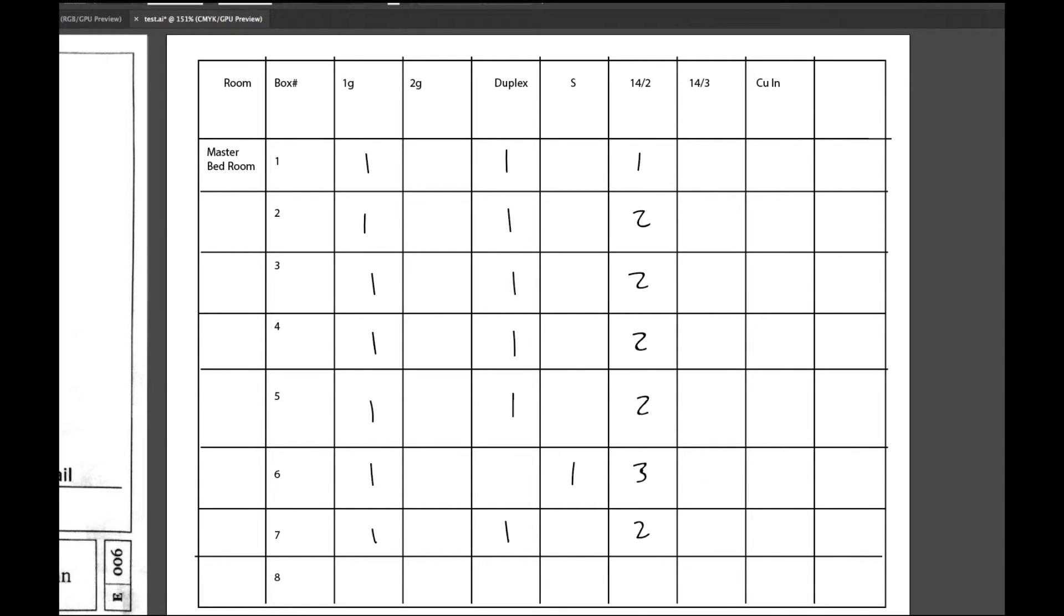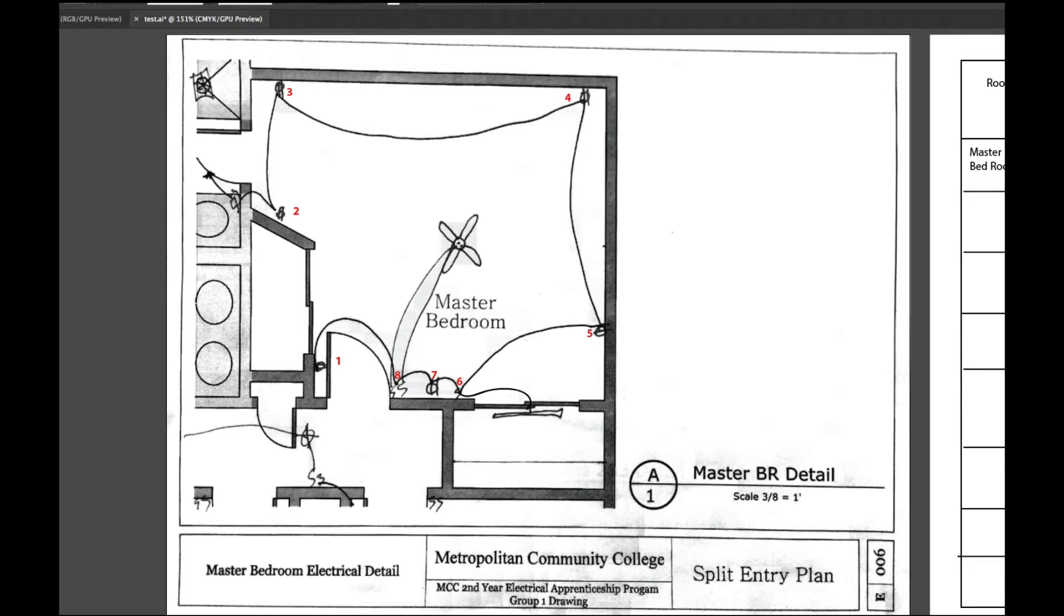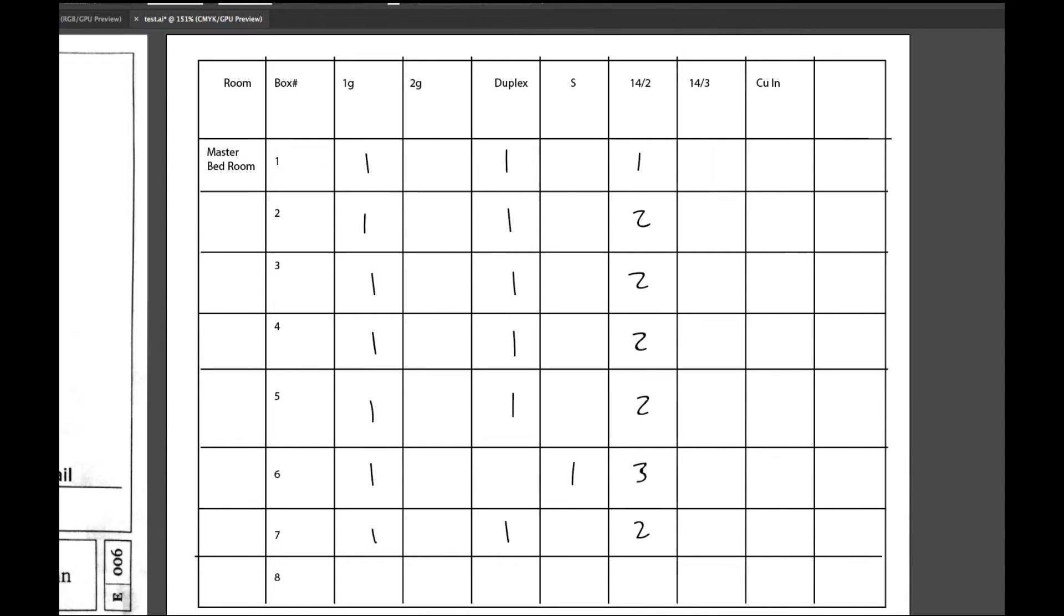And then let's look at box eight. Now that's a two-gang box. It has a 14.2 coming from here, a 14.2 going there, and then one 14.3 out to the fan. So if I do this, it will be a two-gang. I have two switches, two 14.2s, one 14.3.